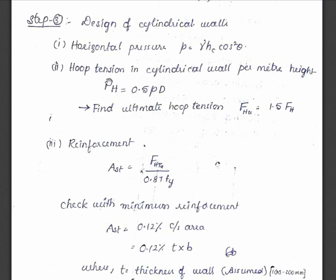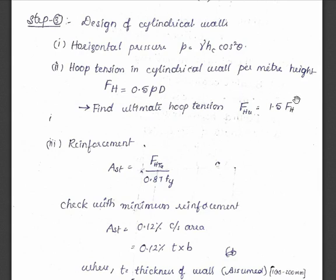Hoop tension in the cylindrical wall per meter height: Fh equals 0.5 pd. Using this formula we get the hoop tension. Then find the ultimate hoop tension: Fhu equals 1.5 Fh — that is, we multiply the hoop tension by the factor of safety of 1.5 to get the ultimate hoop tension.